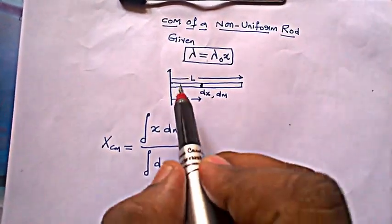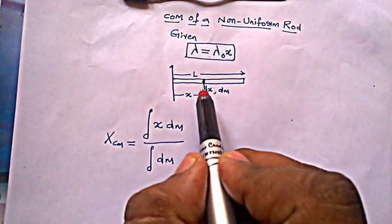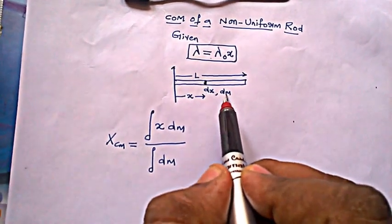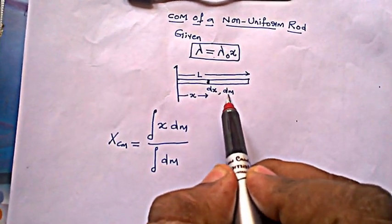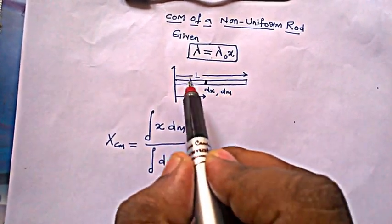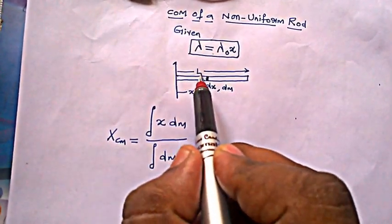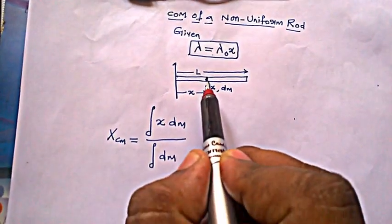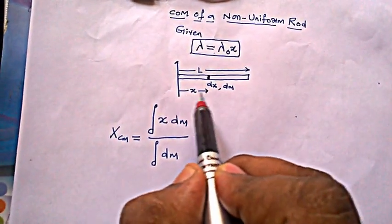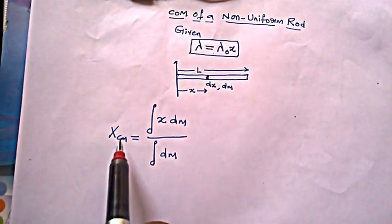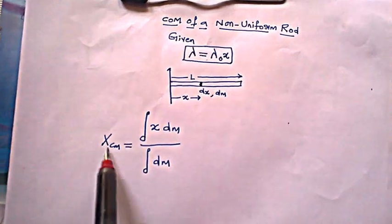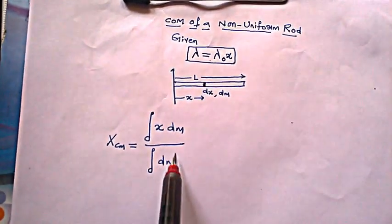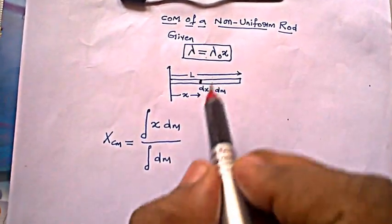So I have chosen an elemental length dx having elemental mass dm. Capital L is the length of the entire rod, and this dx is at a distance x. The center of mass coordinate is given by integral x dm divided by integral dm.